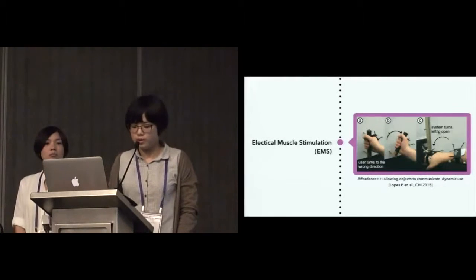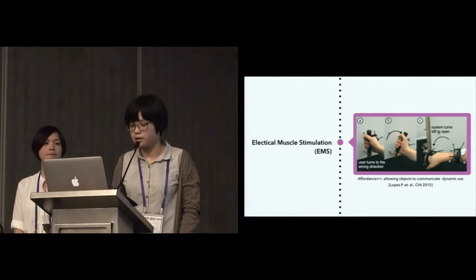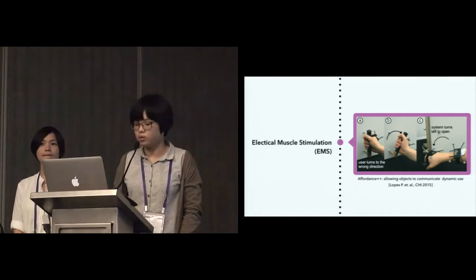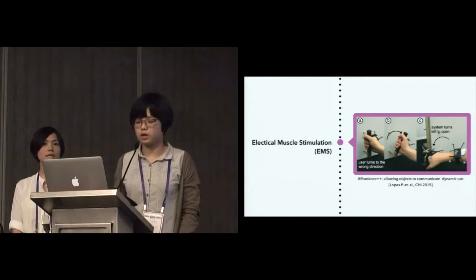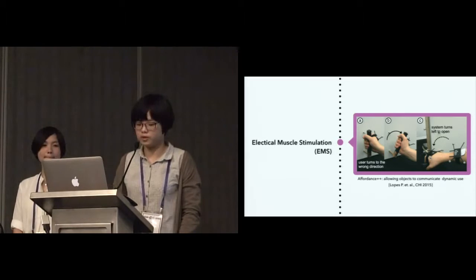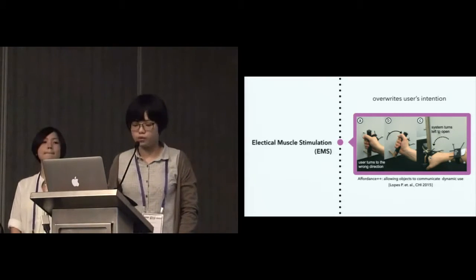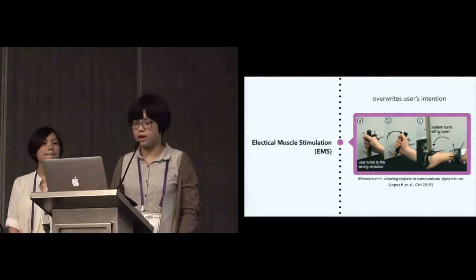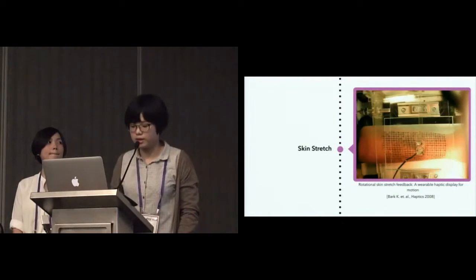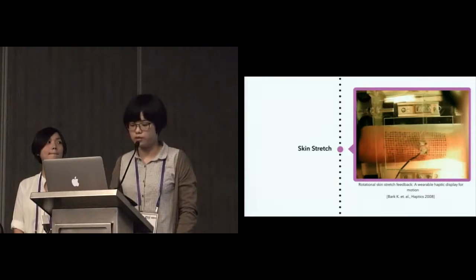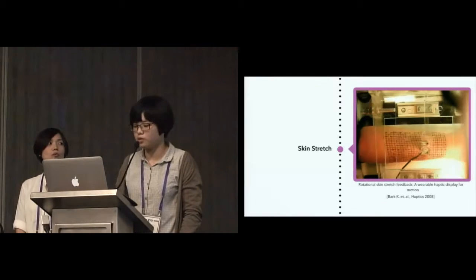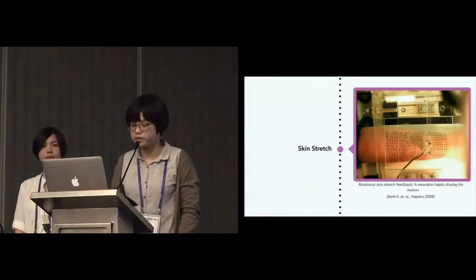Electrical muscle stimulation is another approach in motion guidance. Electricity stimulates the muscle and causes the contraction of specific muscles to make people perform a certain movement. However, this overrides users' intention and makes them react involuntarily. Skin stretch excites the skin to deliver rotational skin stretch cues and cause users to feel the location and directional hints on the skin.